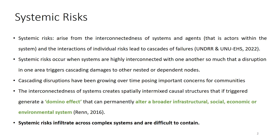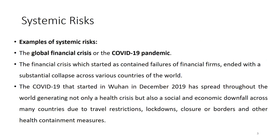Systemic risk infiltrates across complex systems, and it's very difficult to contain them. We've seen that with the global financial crisis in 2008, where it started with failures of financial firms and then ended up with a substantial collapse across various countries in the world. Similarly, COVID-19 started in Wuhan in December 2019 but spread throughout the world, generating not only a health crisis, but also a social and economic downfall across many countries.